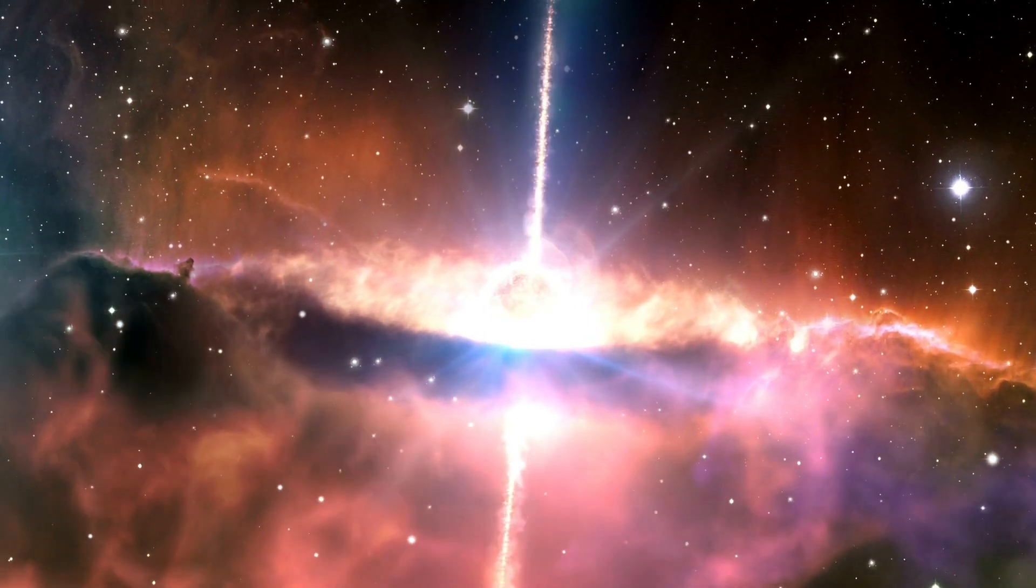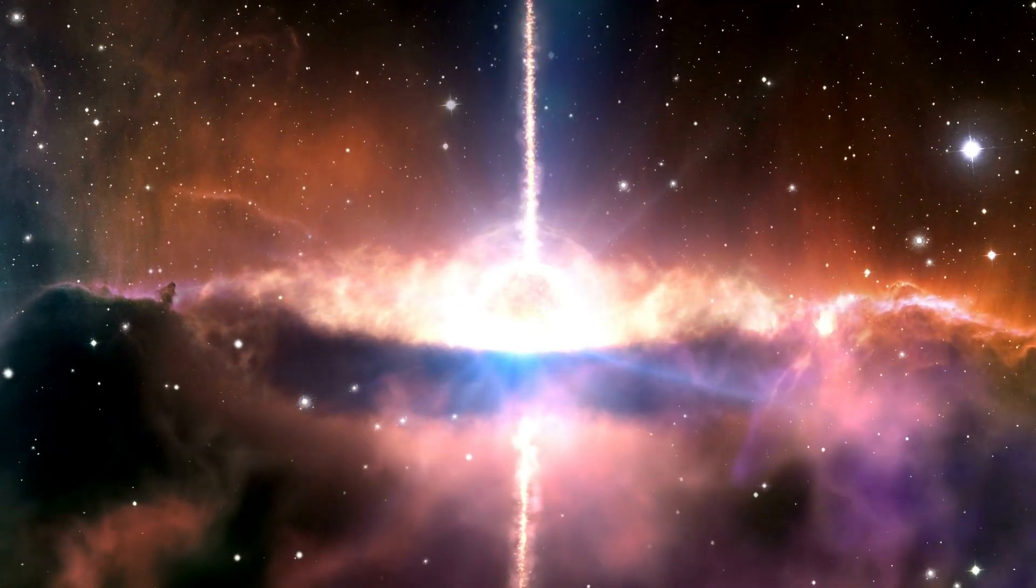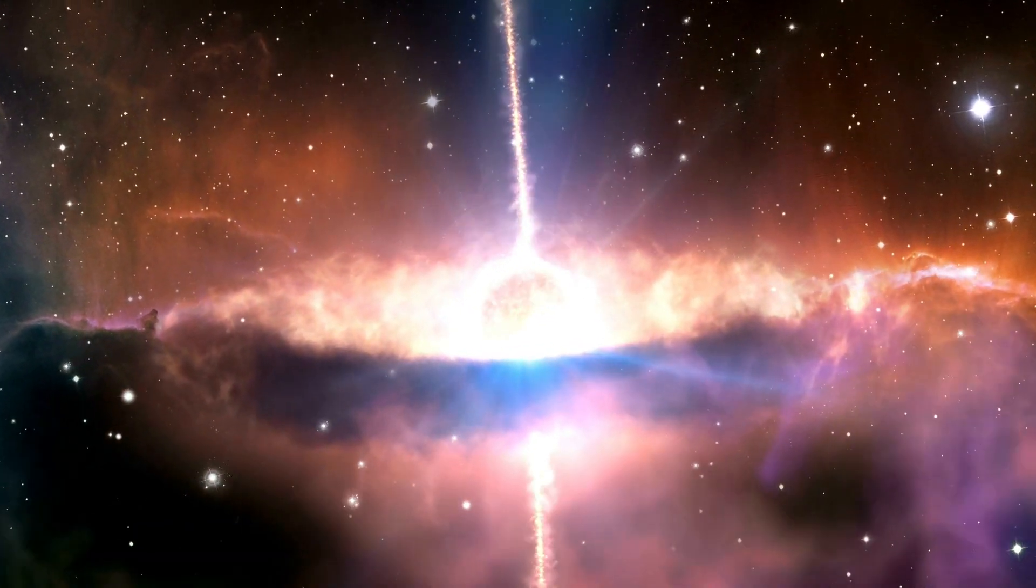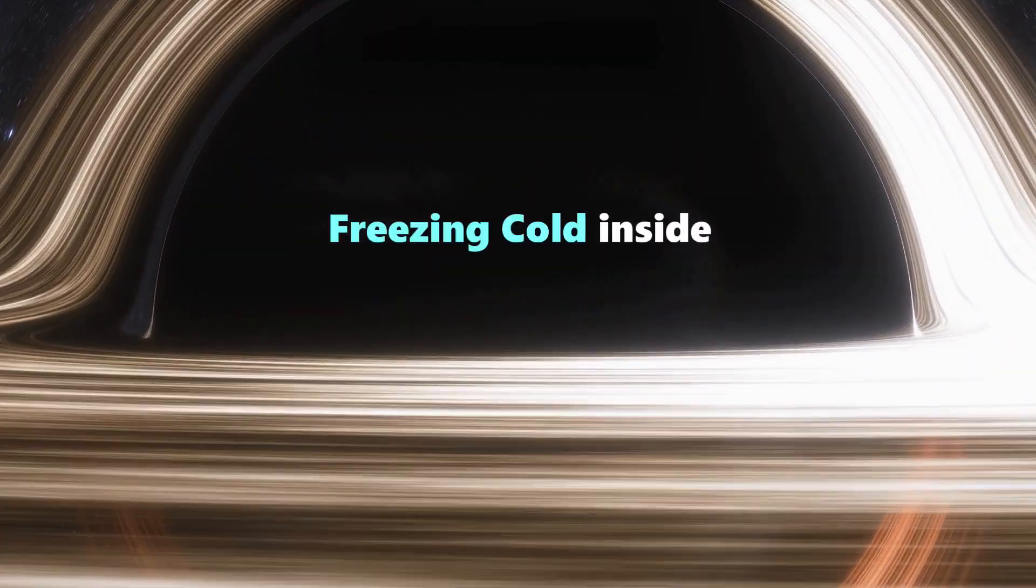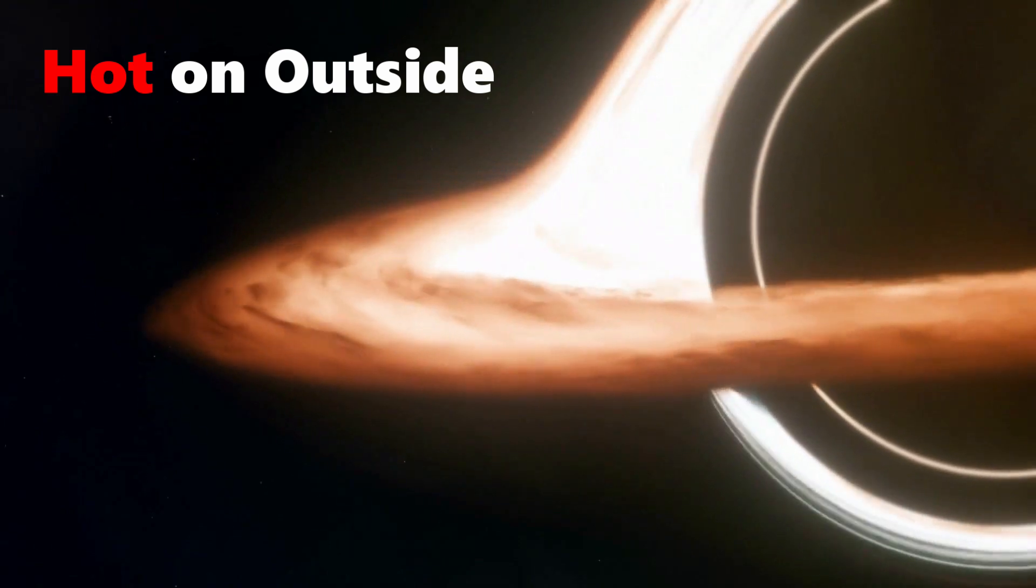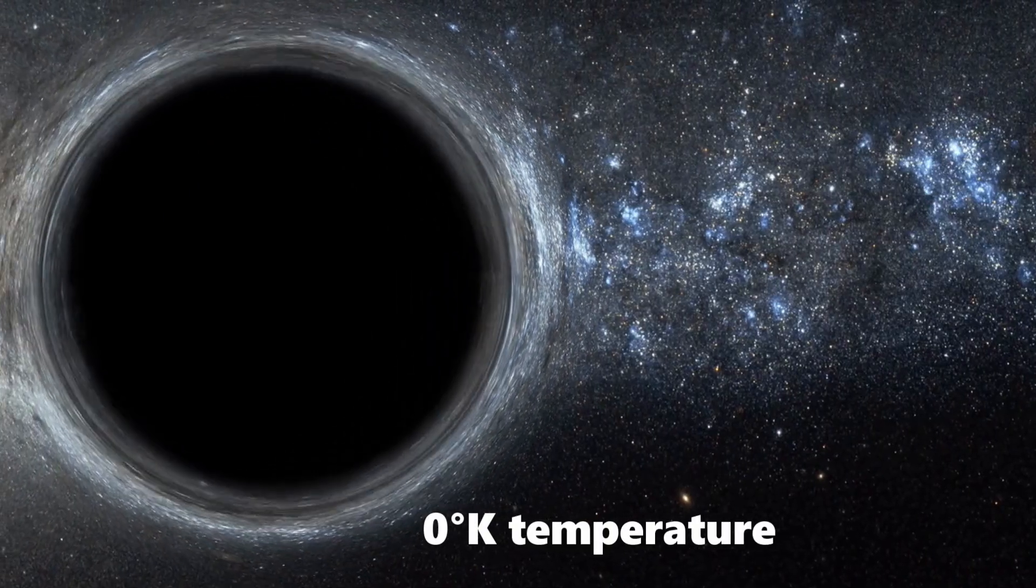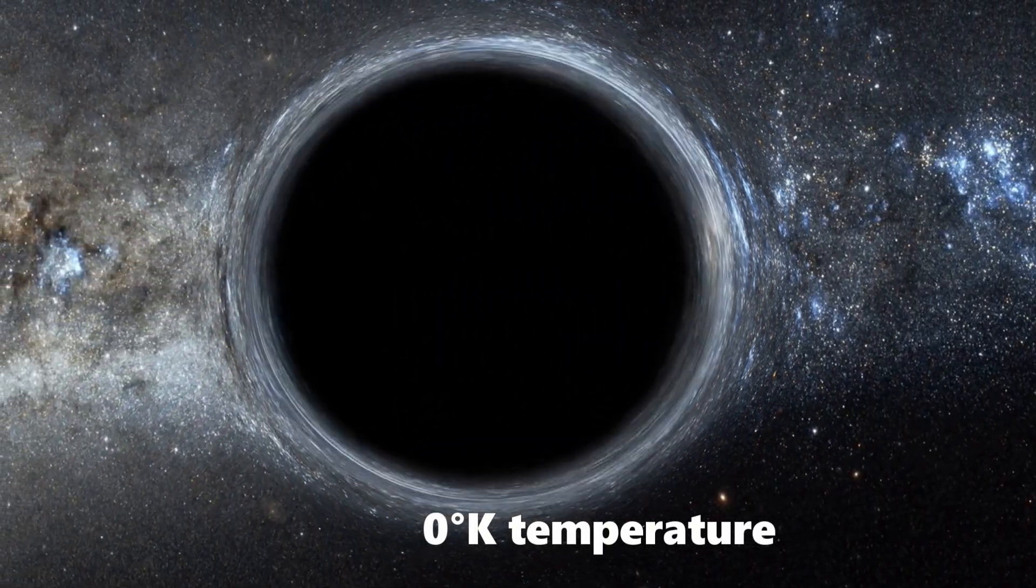Black holes get larger by enveloping celestial bodies and even other black holes around them. Black holes are freezing cold inside, but they're also very hot on the outside. The internal temperature of a black hole is almost absolute zero.